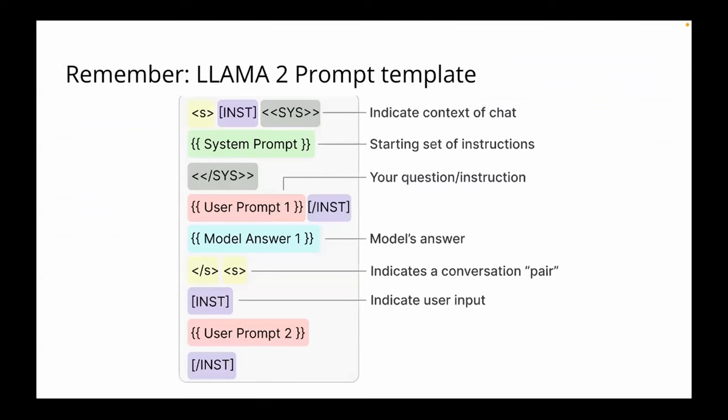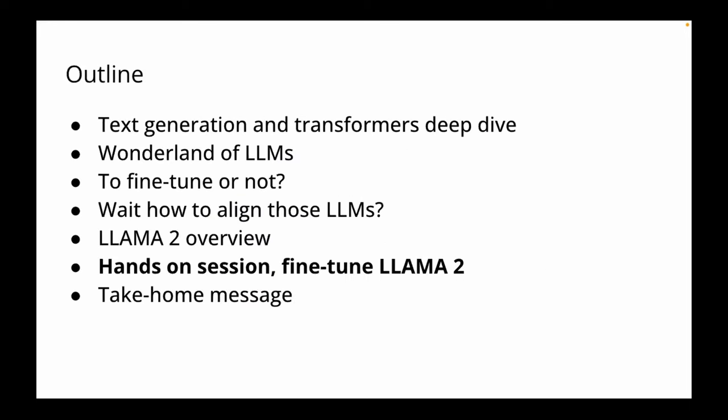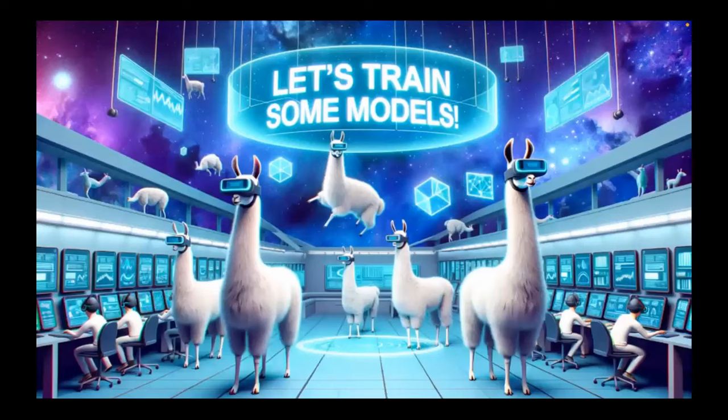When you work with LLaMA 2, please always remember that it has a specific prompt template. This is how they expect you to query this large language model to get reliable output. You essentially have system messages, a system prompt, then ideal model answers — or a user prompt and model answer when you do few-shot prompting.